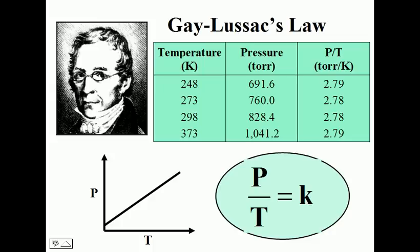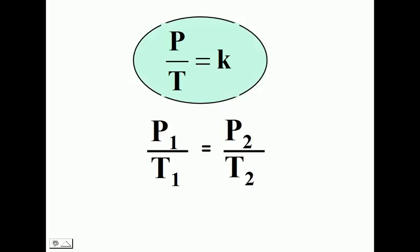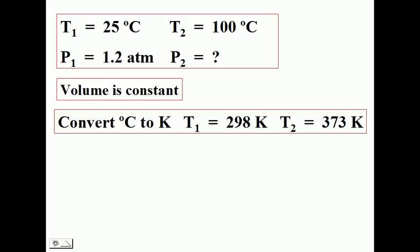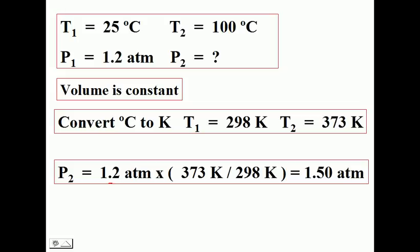Looking at a set of experimental data, you can clearly see temperature increase and pressure increase. There is an equation you could use to solve, but we're going to apply the logic as before. We can see that our temperature is increasing, so we do expect an increase in pressure. First, convert your temperatures to Kelvin. Take your original pressure and set up your ratio — the larger temperature over the smaller — to give you that expected increase in pressure.